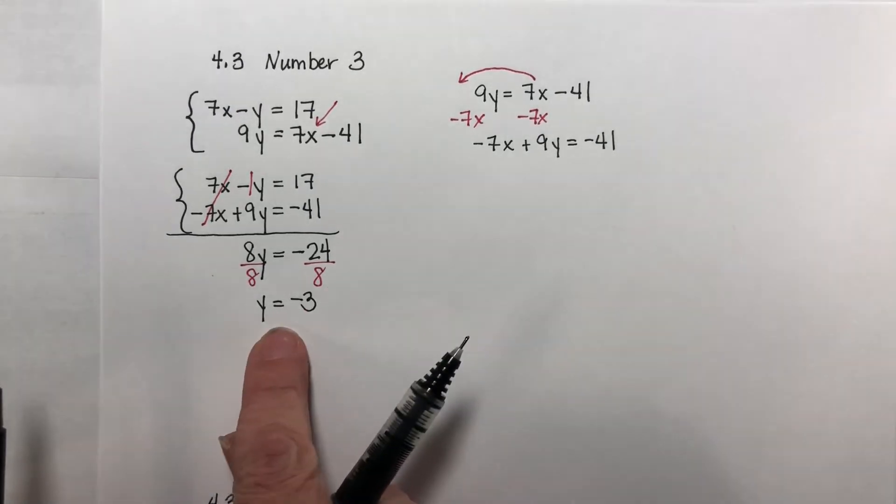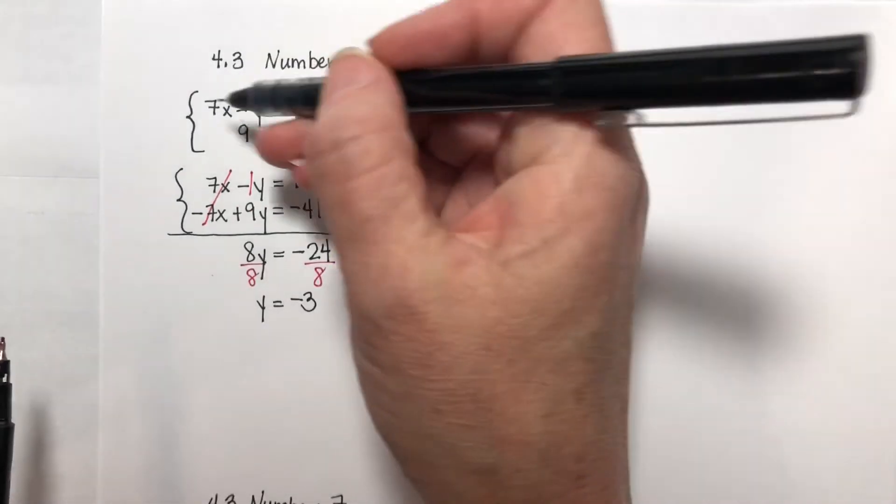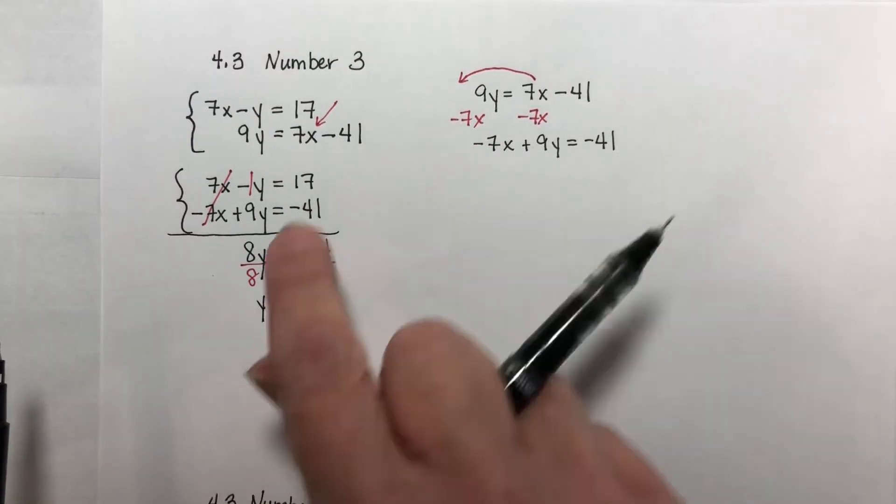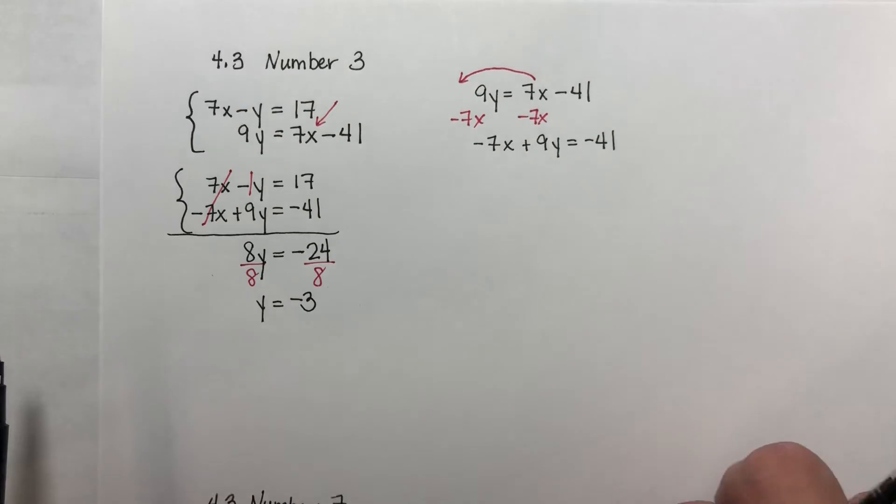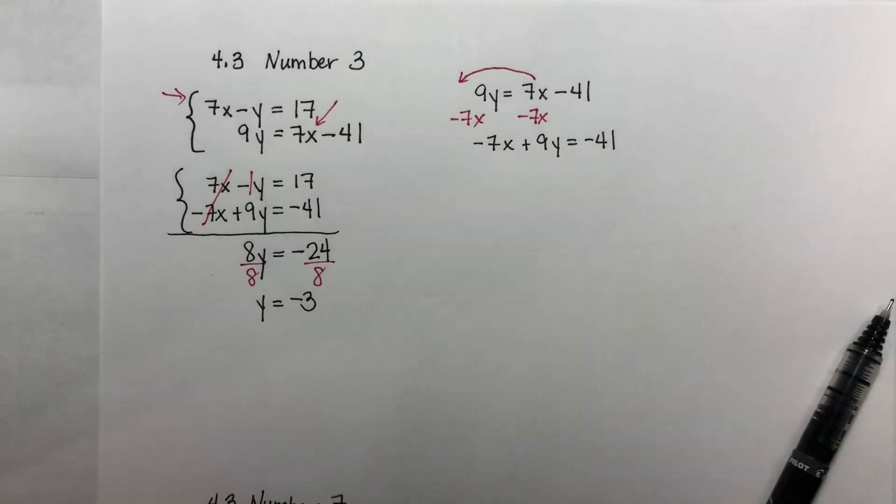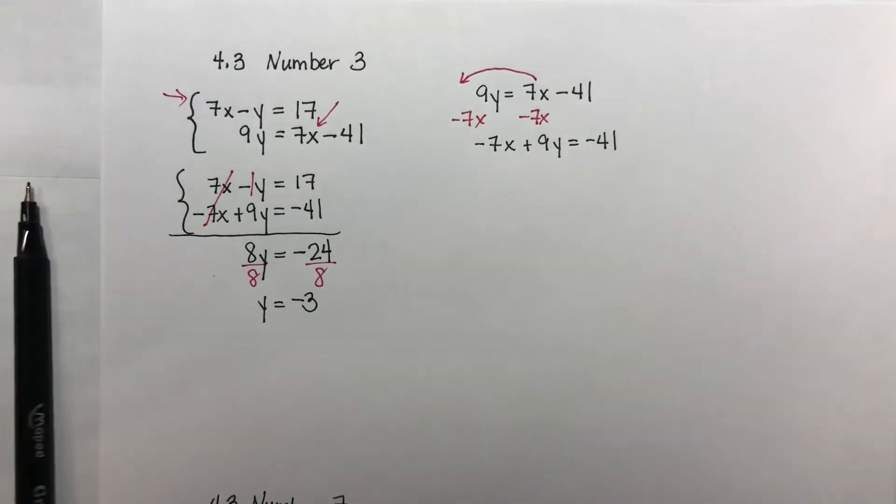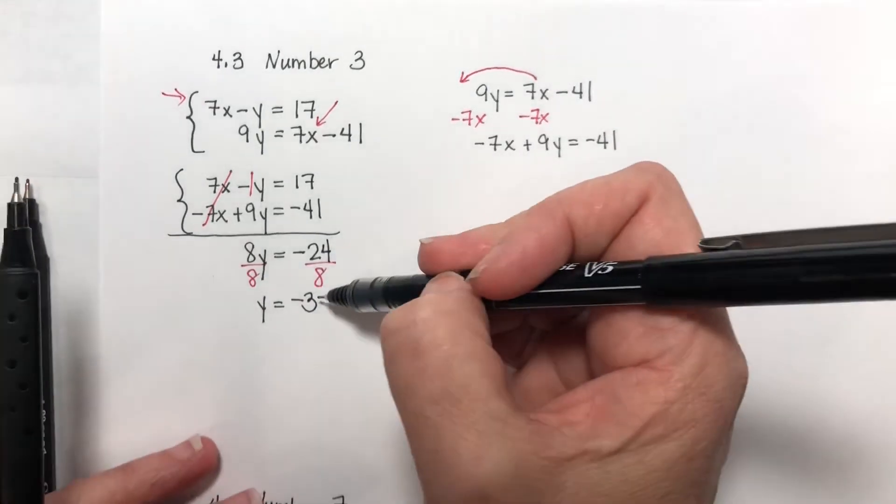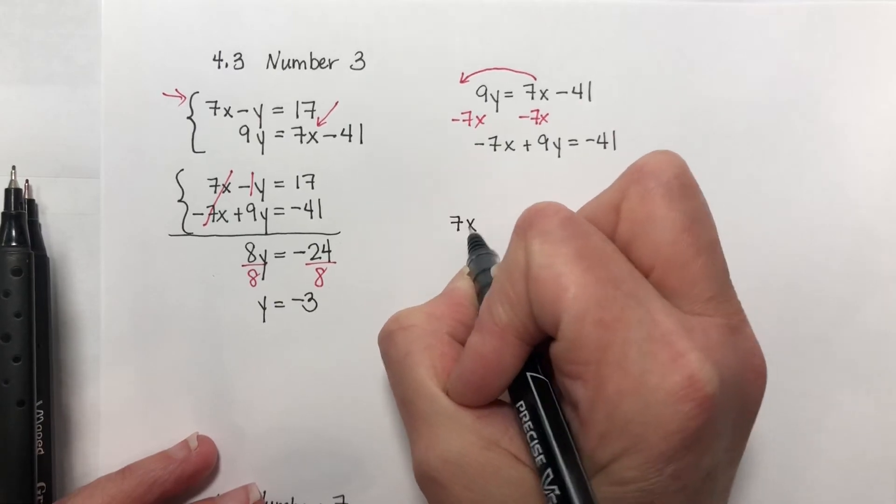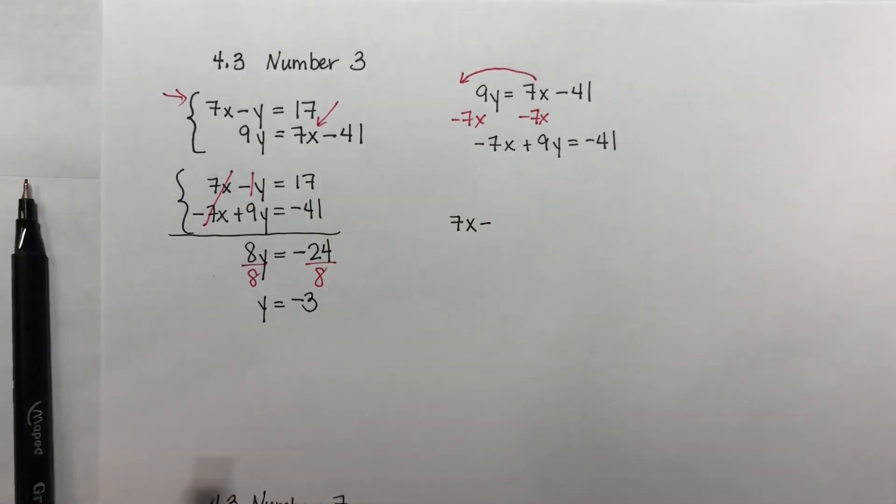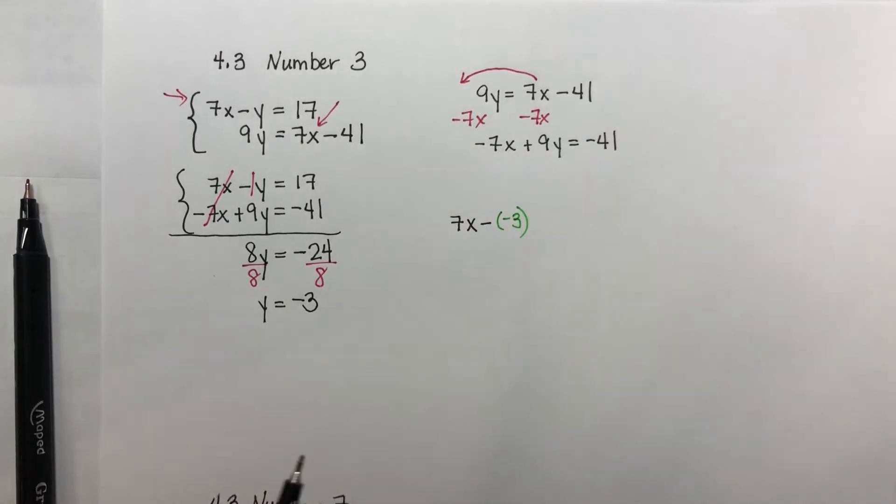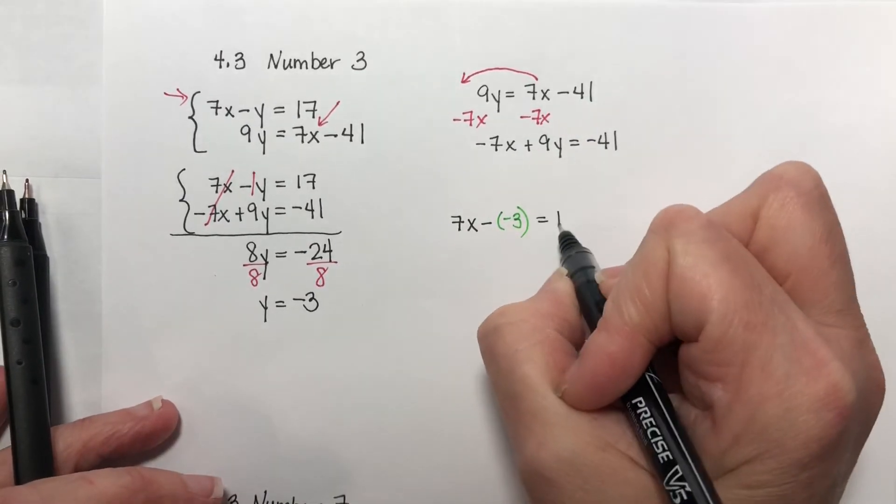All right. So we have found our y value. We also need our x value. So I'm going to take this number and plug it in for y in either one of these two. Now, personally, I think this one looks easier to deal with. So that's what I'm going to do. So if I'm taking this and I'm plugging it in here, I have 7x minus, I'm plugging in a negative 3. And that's supposed to equal 17.